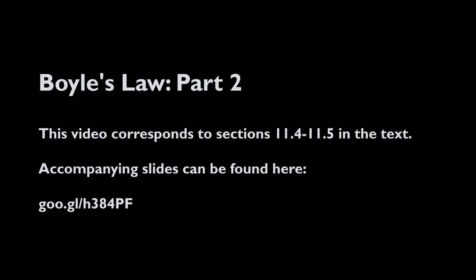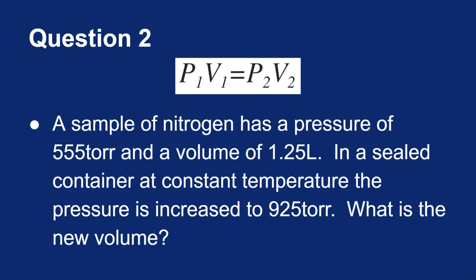Let's look at another Boyle's Law example, but this time let's solve for volume. I am told that a sample of nitrogen gas has a pressure of 555 torr and measures at a volume of 1.25 liters.